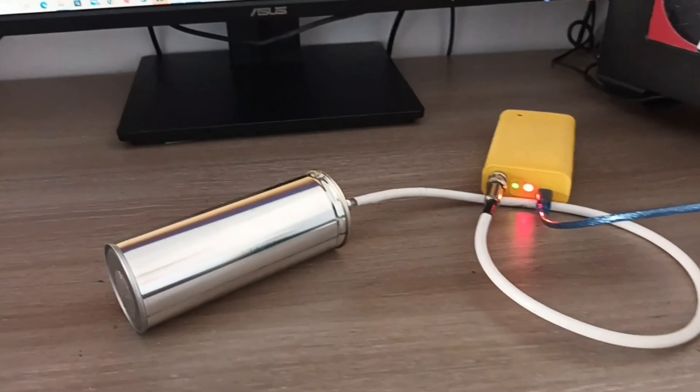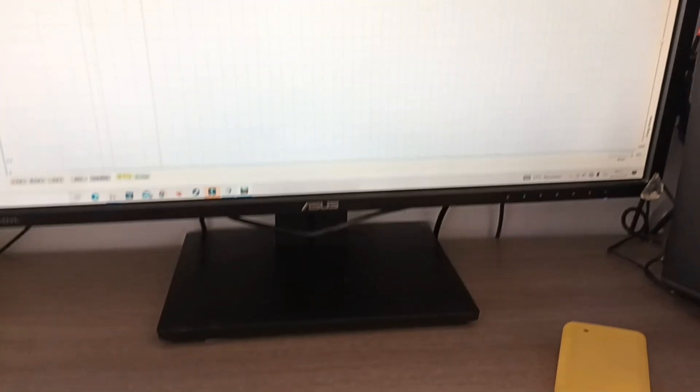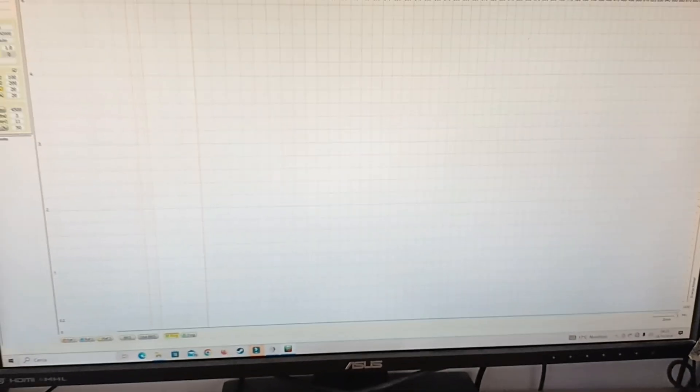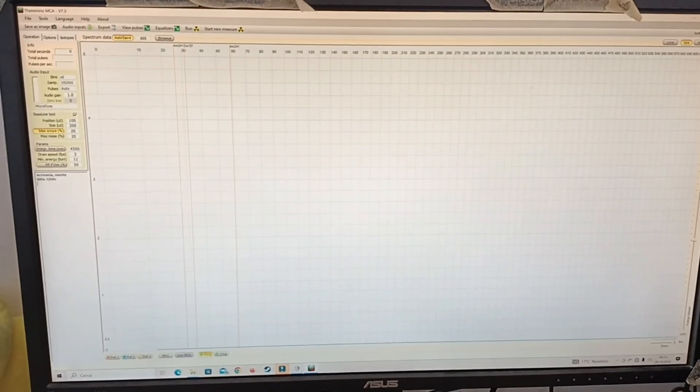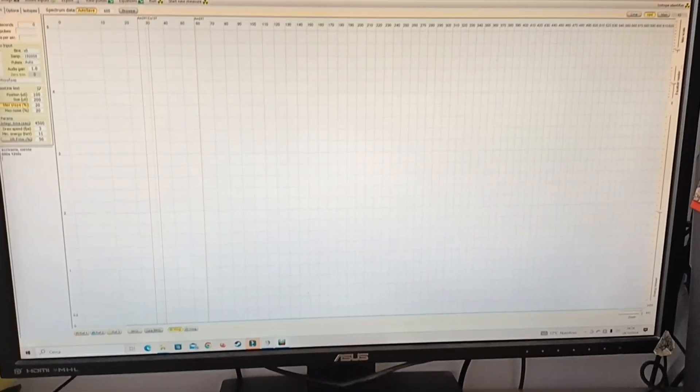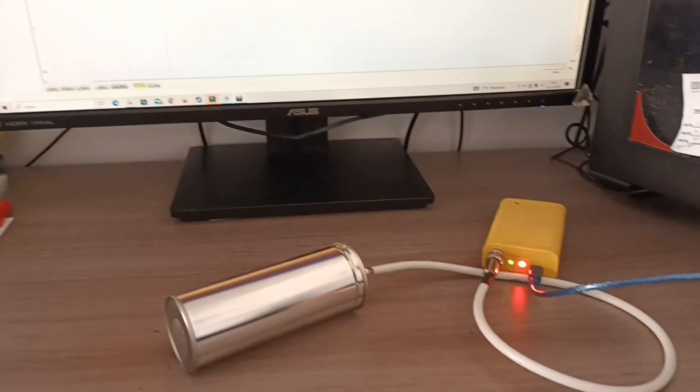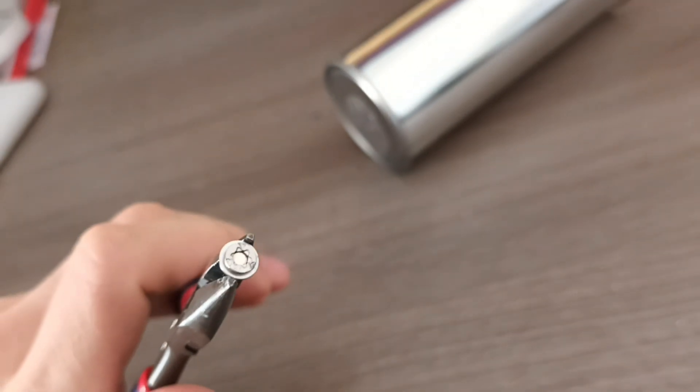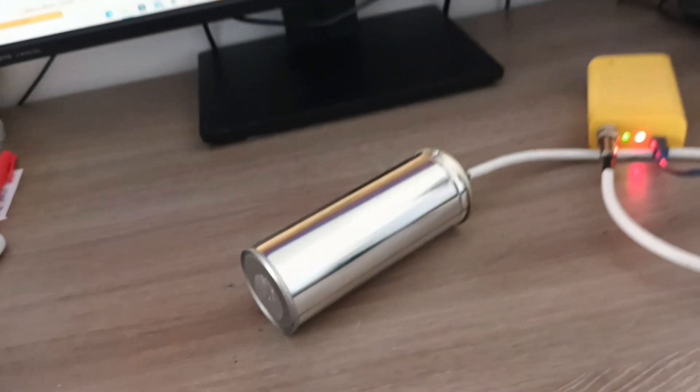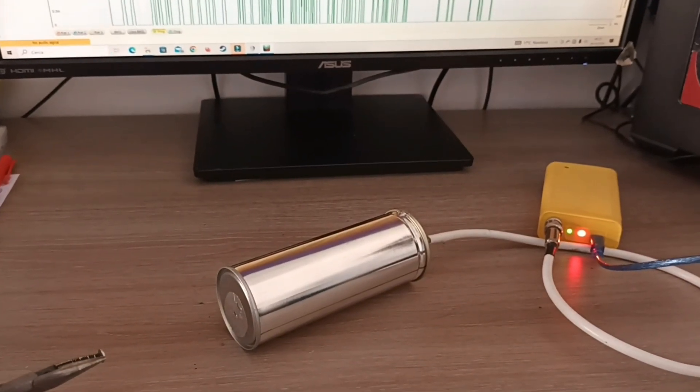So now that our probe is done we need one last thing to be able to use it. Well first of all a computer with the Theremino program running which is the multi-channel analyzer, but we need also a radioactive source to calibrate it and this time because we are interested in the low energy spectrum I'm gonna use this americium button which comes from a smoke detector.